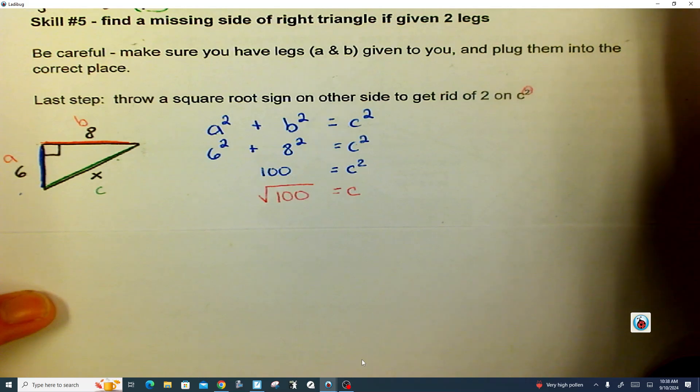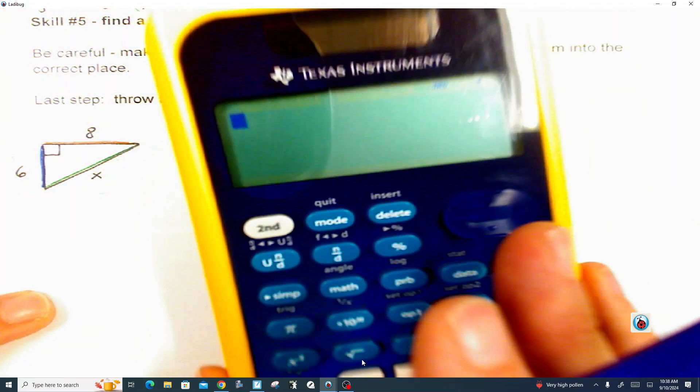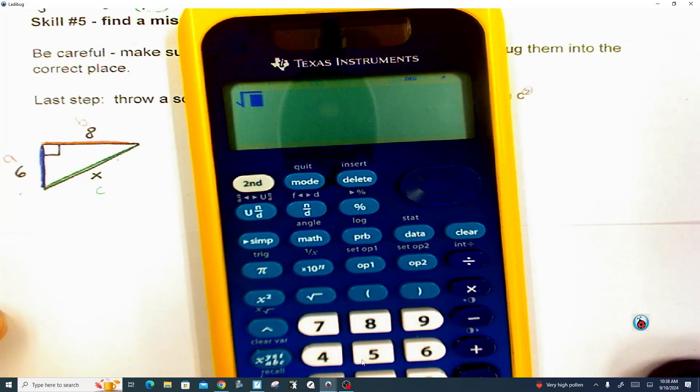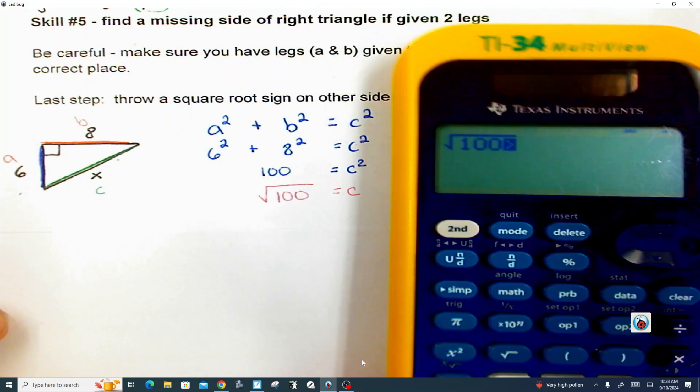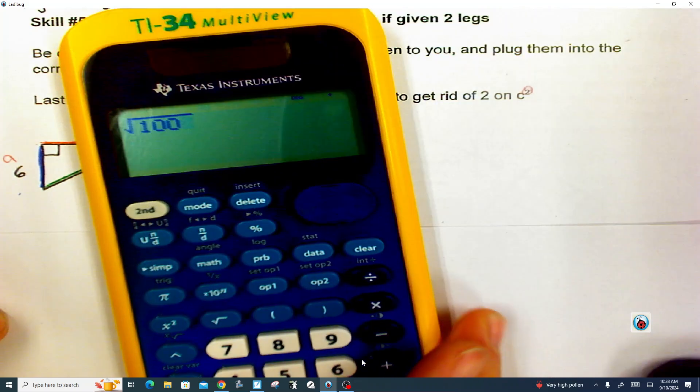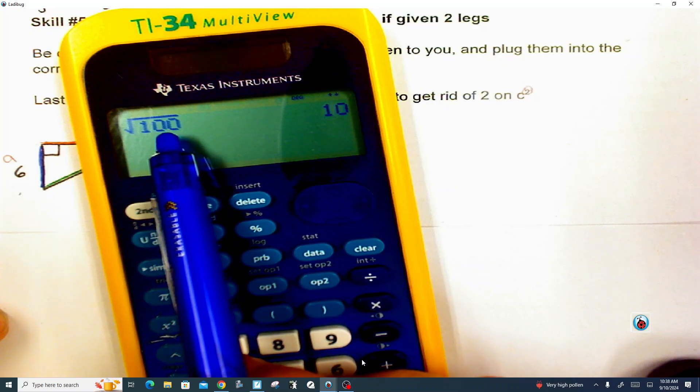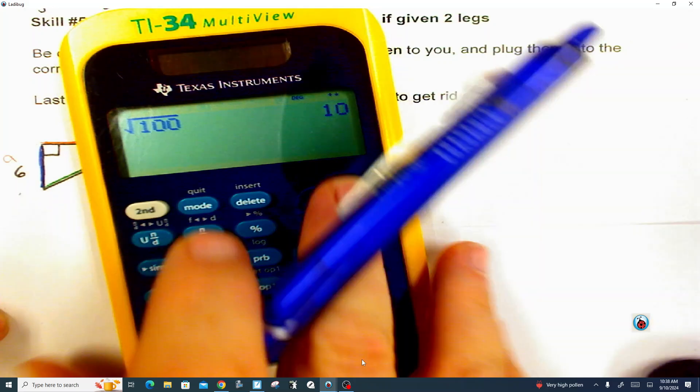But it gets even better than that. We still have our calculator right here. And right above the 7, there's the square root sign. And you can type in the 100. And you hit enter. And this is your calculator's way of answering, hey, I know what number times itself is 100. It's 10.